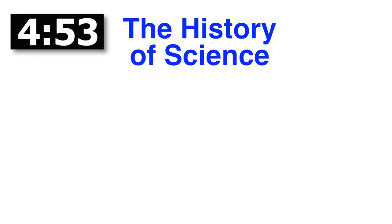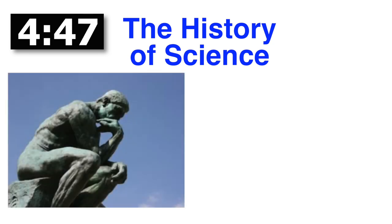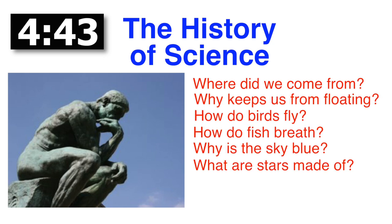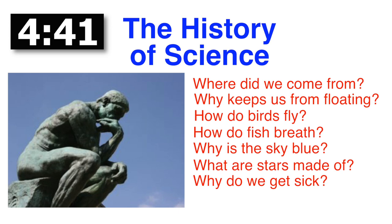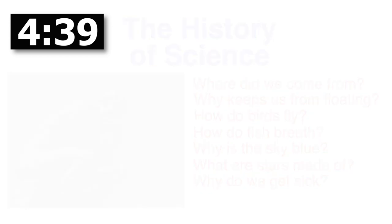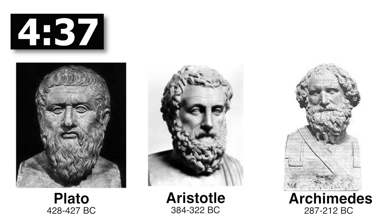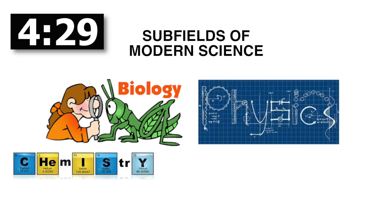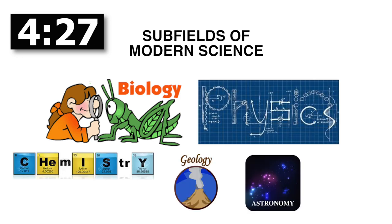So we're going to start with the history of science a little bit as we get into the cell theory. Basically, science as a content study began centuries ago as people began to ask questions about the world and environments in which they lived. Some of the earliest people seeking questions were early philosophers such as Aristotle, Plato, and Archimedes. The ongoing search for knowledge has expanded into subfields of modern science such as biology, physics, chemistry, geology, and astronomy, to name a few.